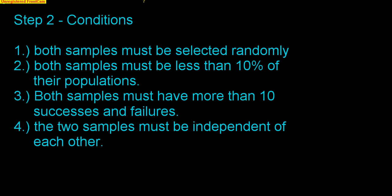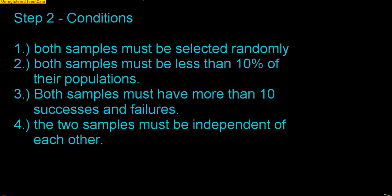Step two is our conditions. These should sound familiar, but you have to check the conditions for both samples. Condition one: both samples must be selected randomly. Condition two: both samples must be less than 10% of their respective populations. Condition three: both samples must have 10 successes and 10 failures — so that's four numbers to check. Condition four: the two samples must be independent of each other, meaning the outcome of one does not affect the outcome of the other.